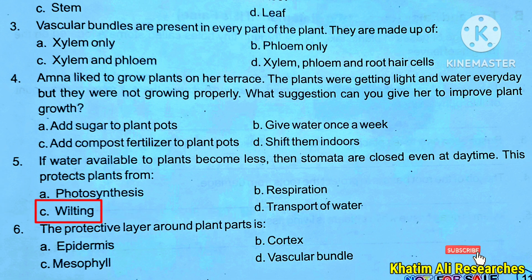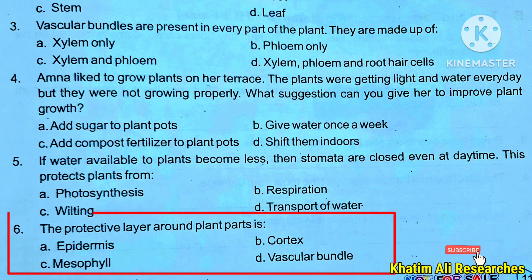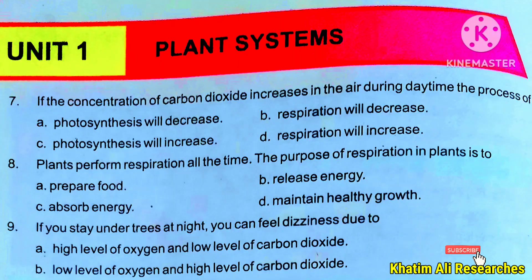Question 6: Which structure forms a protective layer around plant parts? Options: A. Epidermis, B. Cortex, C. Mesophyll, D. Vascular bundle. The correct option is Epidermis — it forms the protective layer around plant parts.